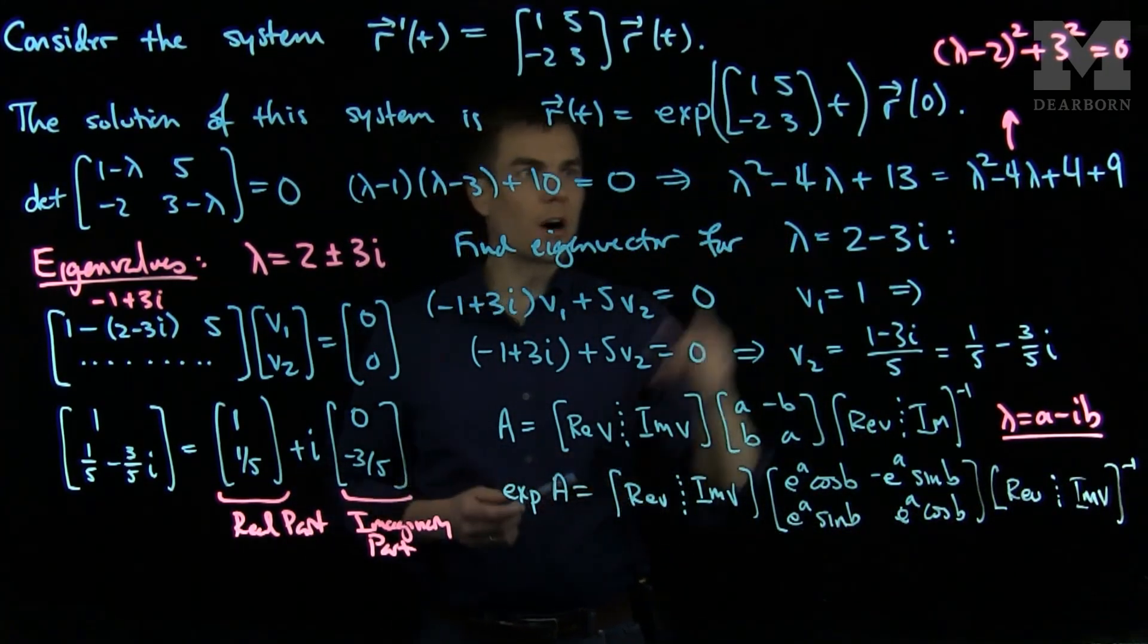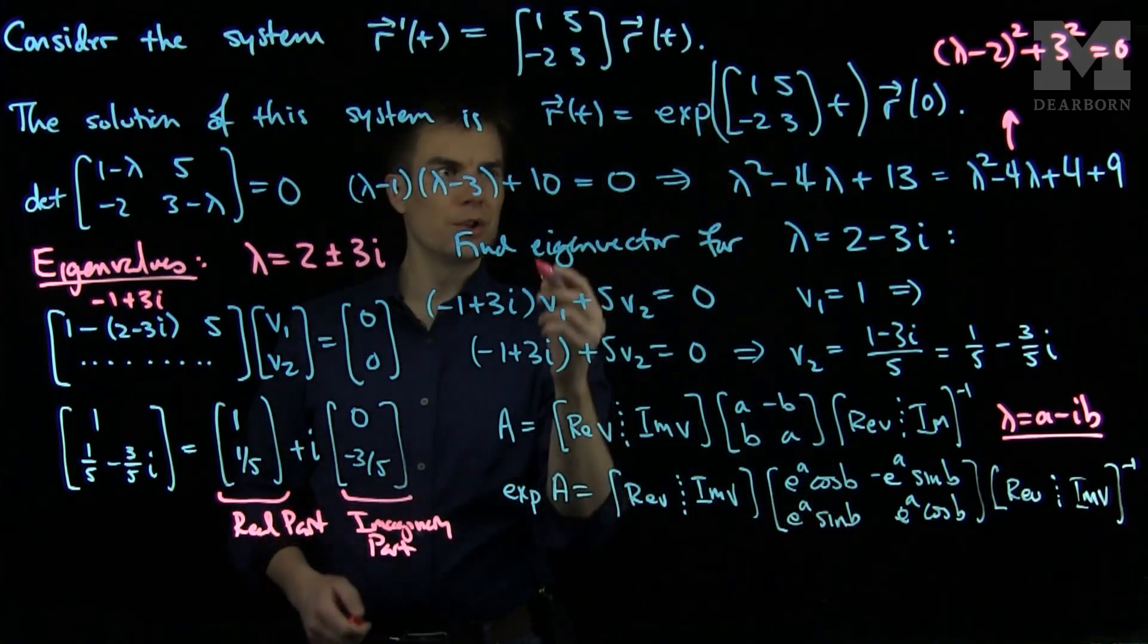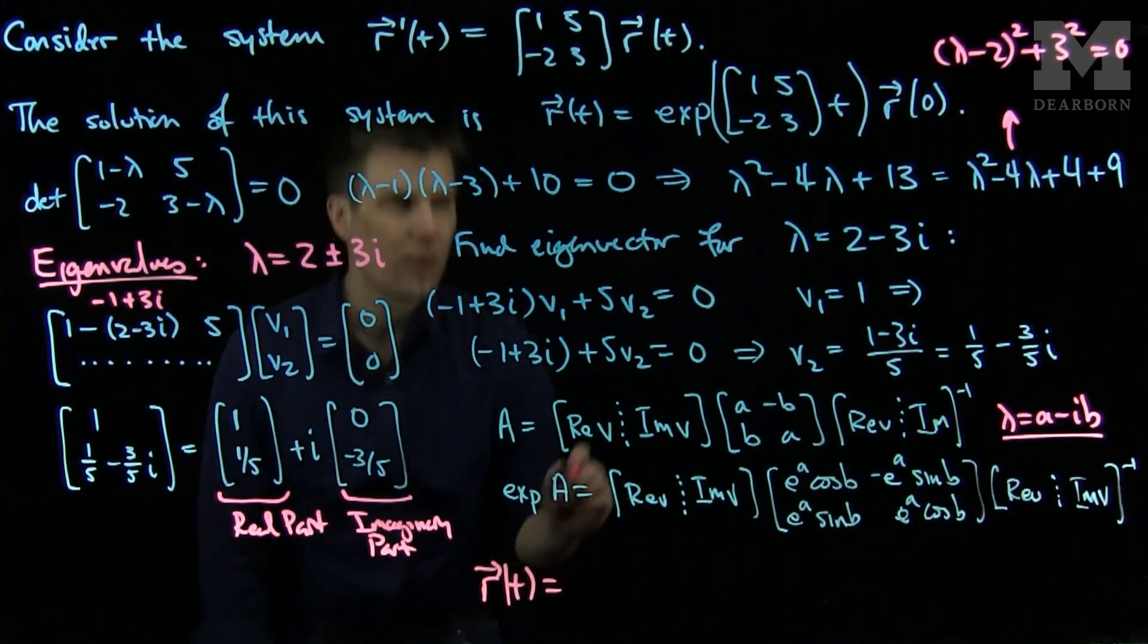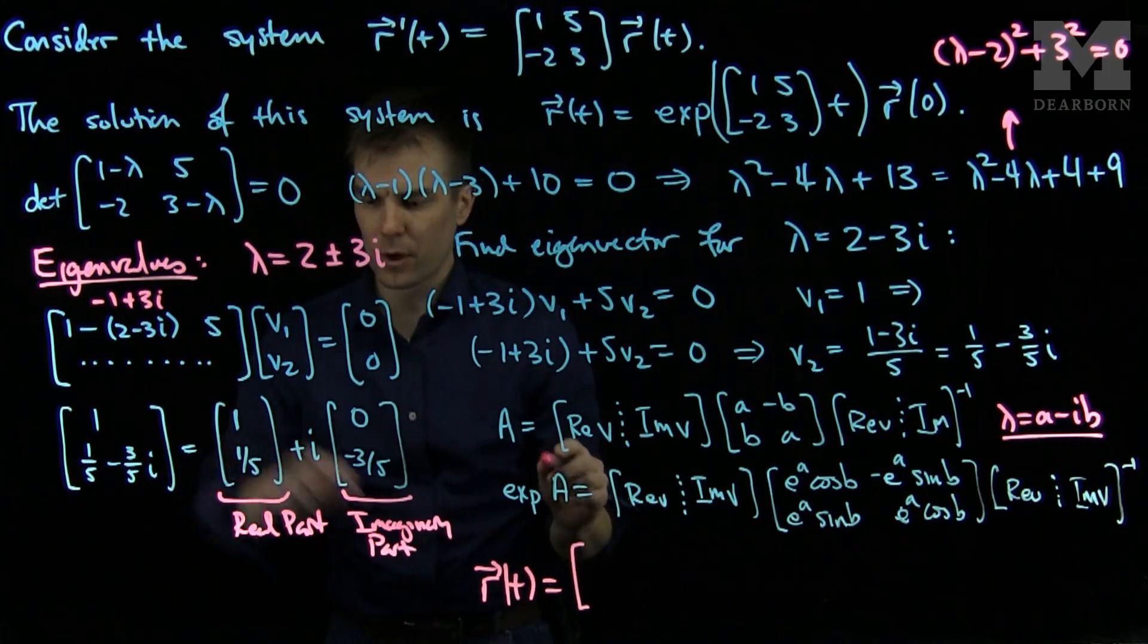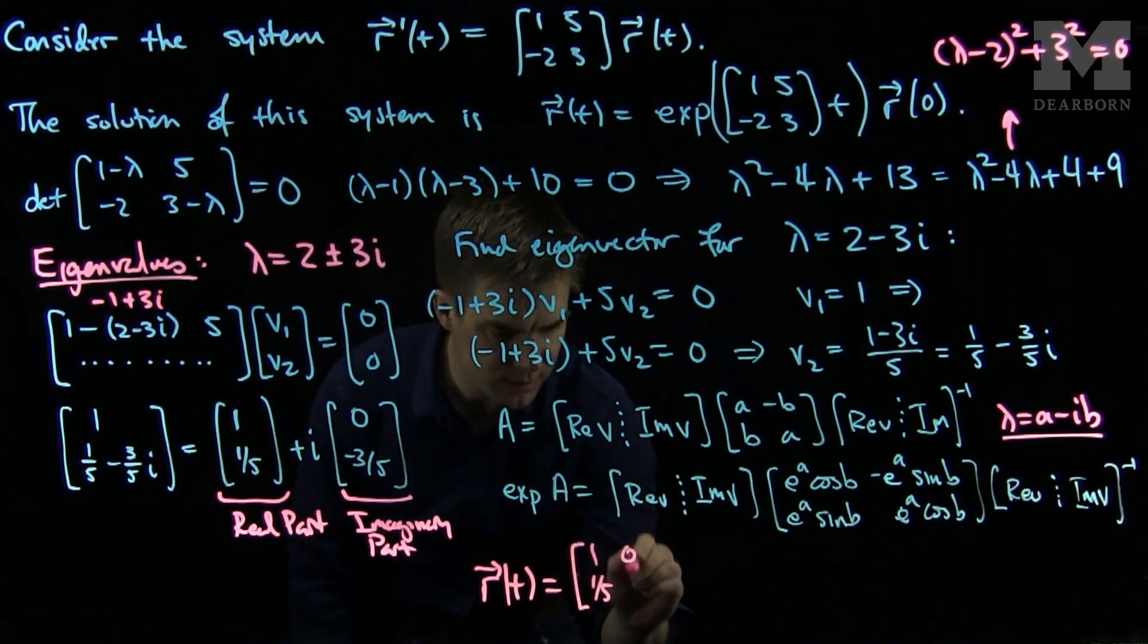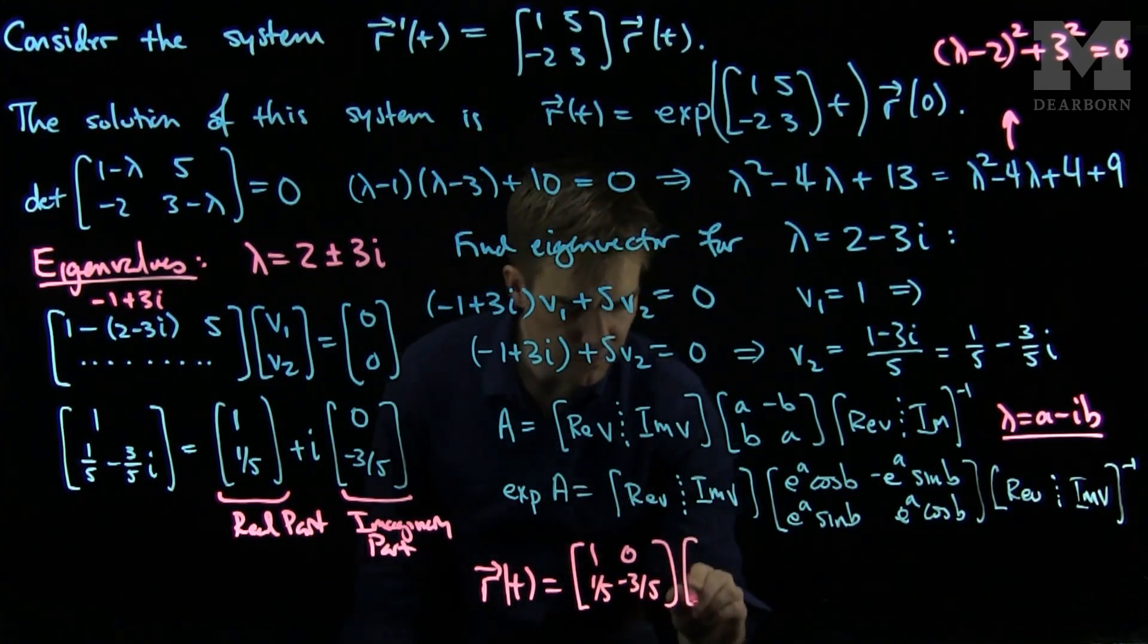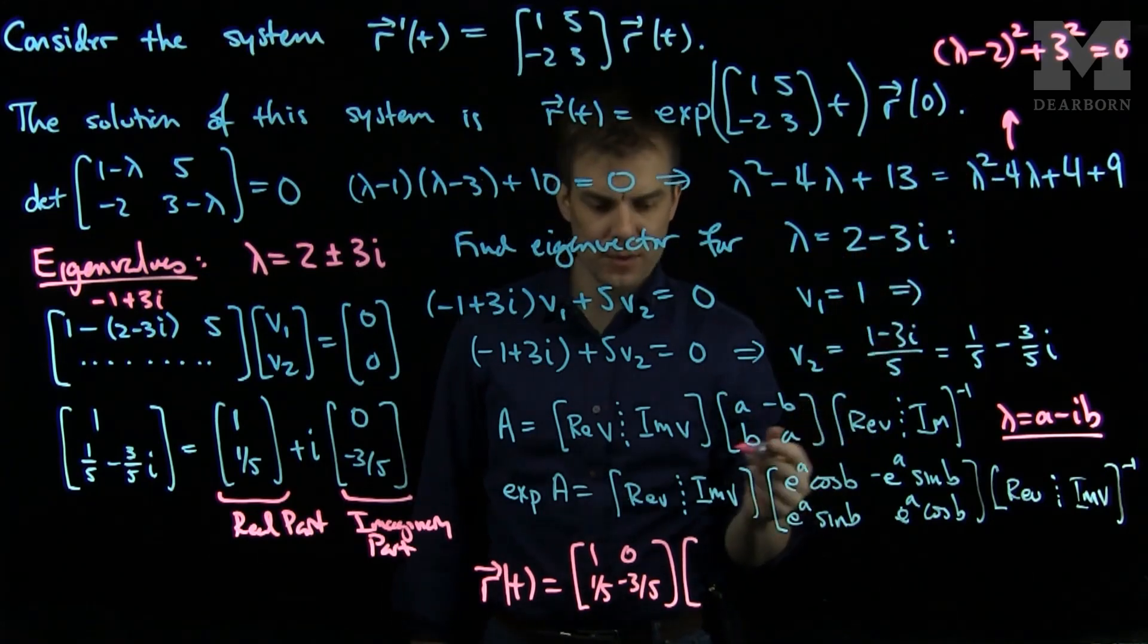In particular, for our problem with t, we can see that our solution r(t) will be the exponential of this matrix. We put the real part in first: [1, 1/5]. Then the imaginary part: [0, -3/5]. In this problem a=2 and b=3. We have [[e^(2t)cos(3t), -e^(2t)sin(3t)], [e^(2t)sin(3t), e^(2t)cos(3t)]].